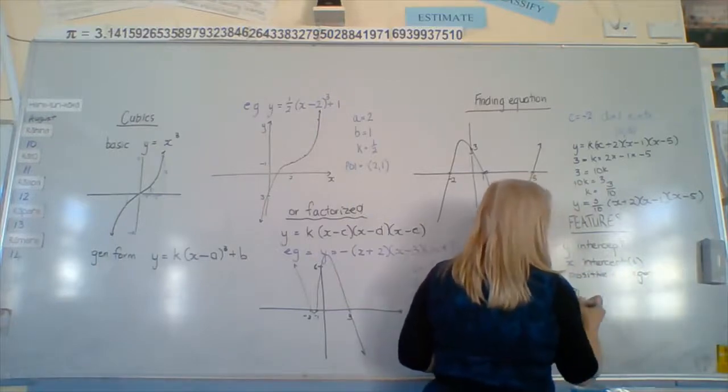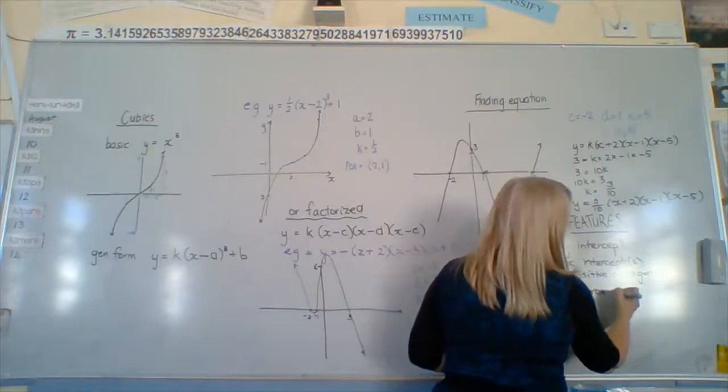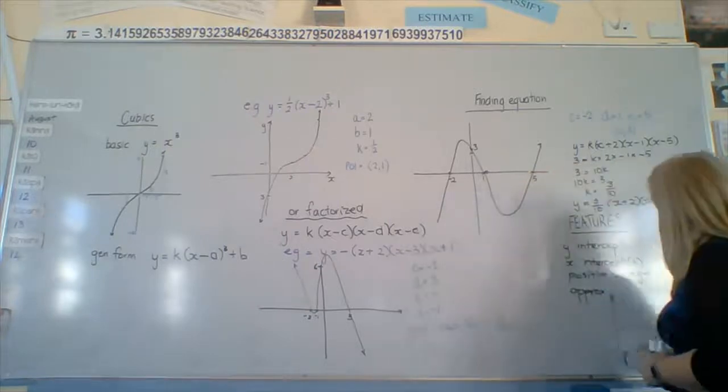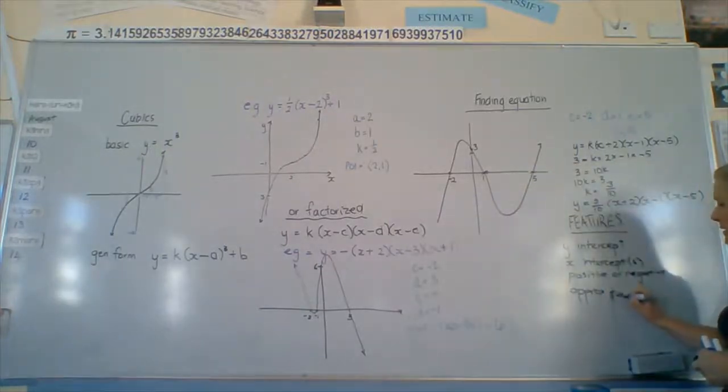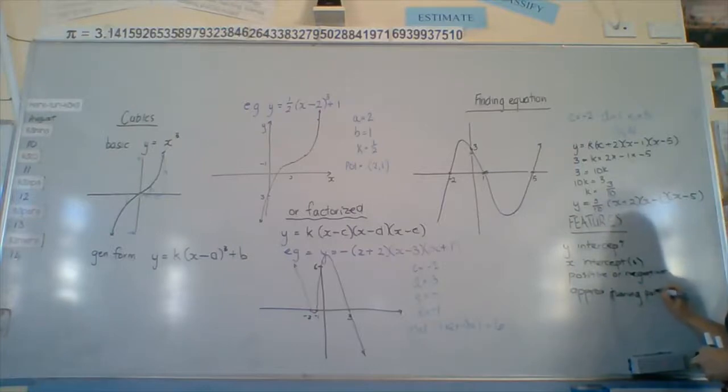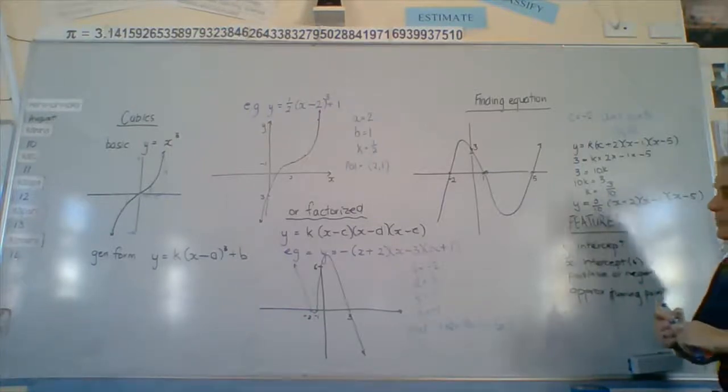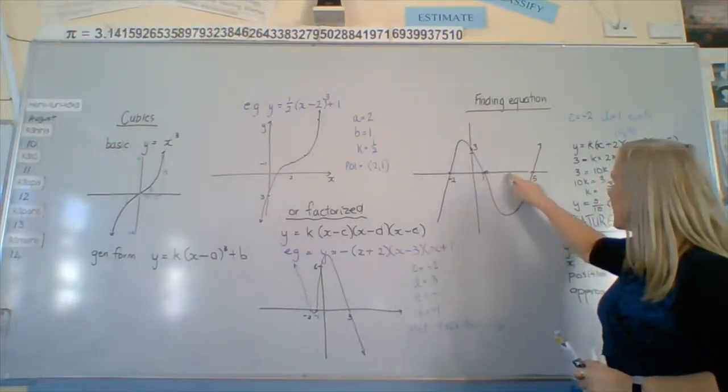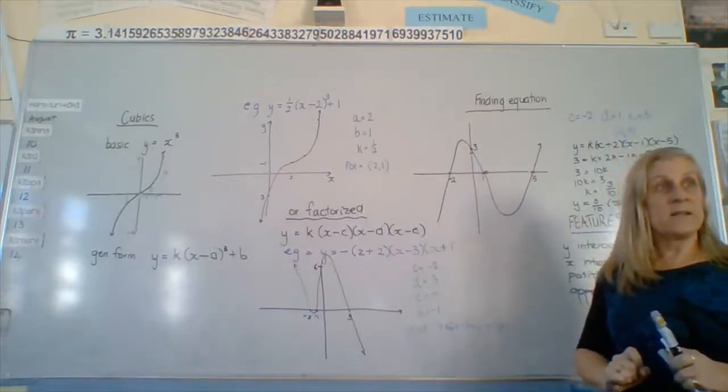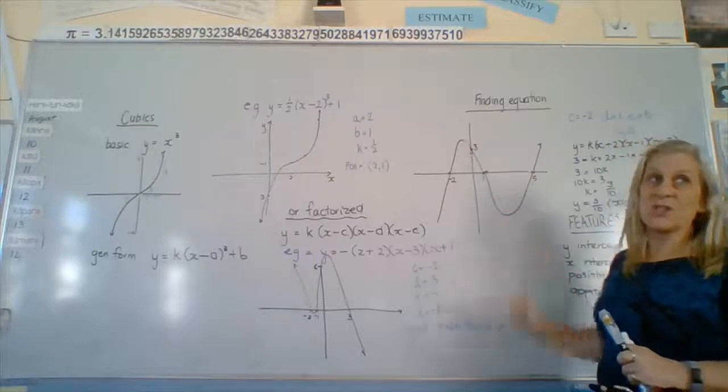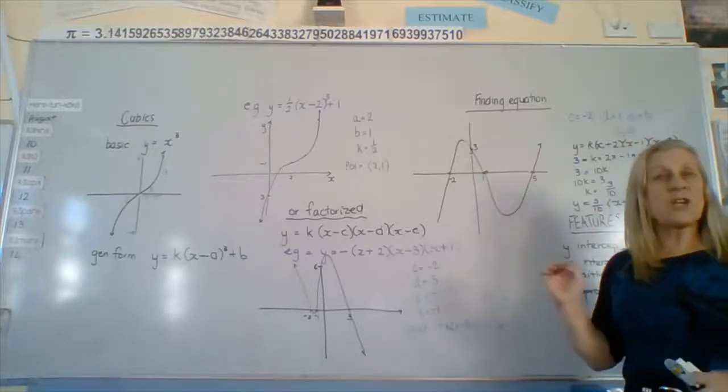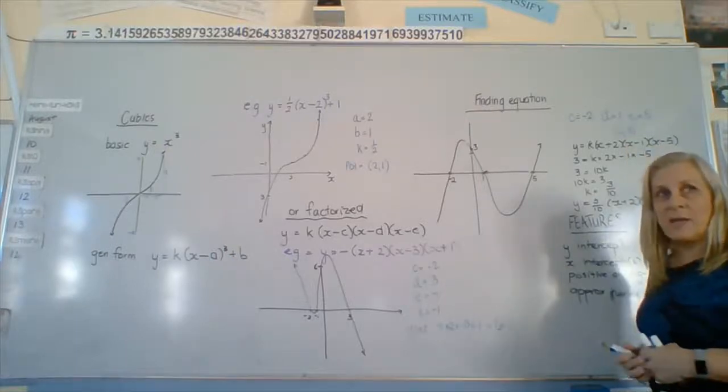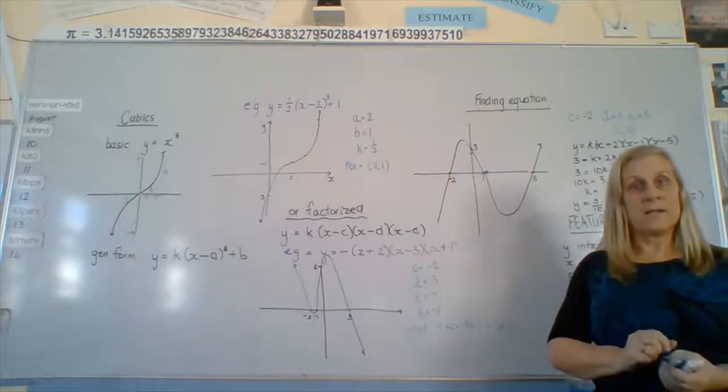And we could approximate the turning points. So if we were doing features, then we could say, okay, I think this one here is at about negative 1, 4. This one here is at about 3, negative 6. So I could approximate those two points because they might be of interest. I don't need to know them exactly. That's calculus. And I could make an approximate guess. Any questions about any of that? Brilliant.